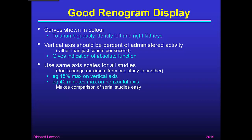From the questions in the quiz, if you use the same axis scales for all studies — that is, you don't change the maximum on the axis from one study to another — I chose the example of 15% maximum on the vertical axis and 14 minutes maximum on the horizontal axis, but you can choose whatever values are appropriate for your department, as long as you're consistent. The reason is that it makes comparison of serial studies easy, because all renograms are shown on the same scales.